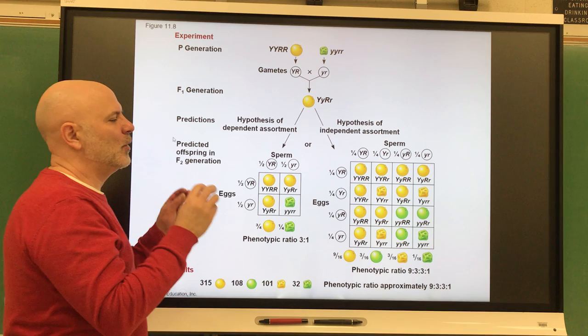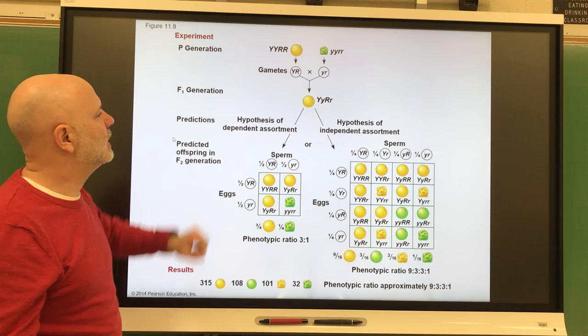But when you get these together, what he saw in his F1 generation was that they were all yellow and round. But they are heterozygous for those traits.